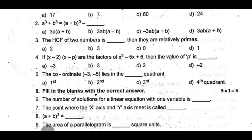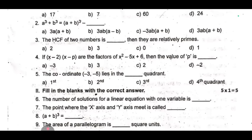Fourth one, if (x - 2) and (x - p) are the factors of x² - 5x + 6, then the value of p is dash. Fifth one, the coordinates (-3, -5) lies in the dash quadrant.